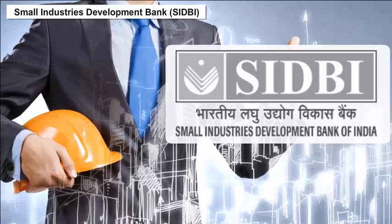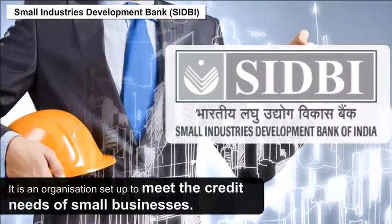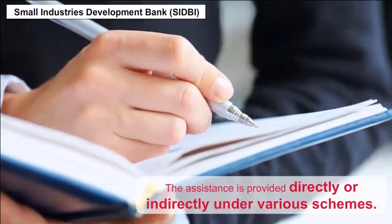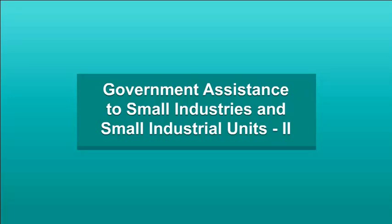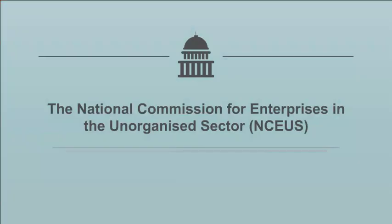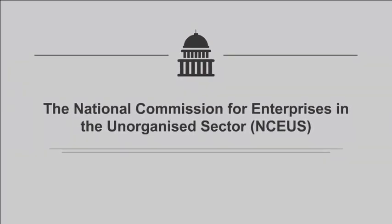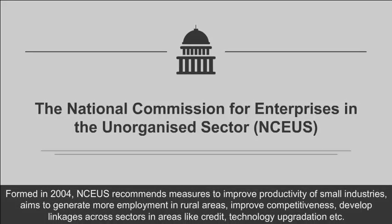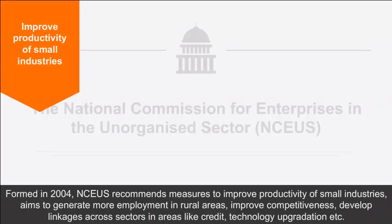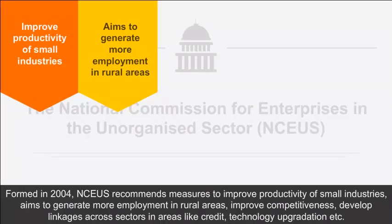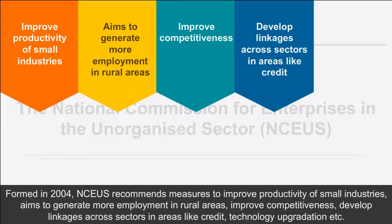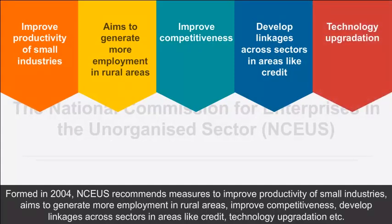4. Small Industries Development Bank (SIDBI): An organization set up to meet the credit needs of small business. Assistance is provided directly or indirectly under various schemes. 5. The National Commission for Enterprises in the Unorganised Sector (NCEUS): Formed in 2004, NCEUS recommends measures to improve productivity of small industries, aims to generate more employment in rural areas, improve competitiveness, and develop linkages across sectors in areas like credit and technology upgradation.